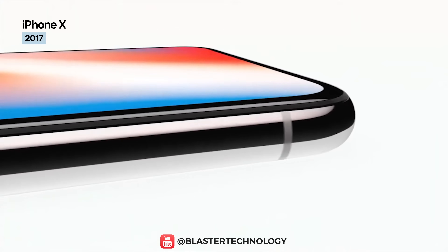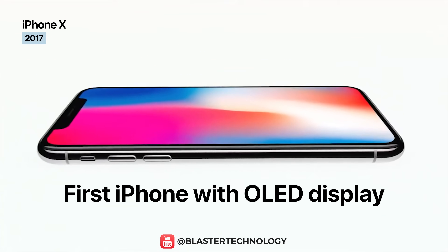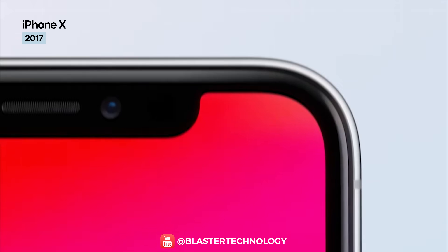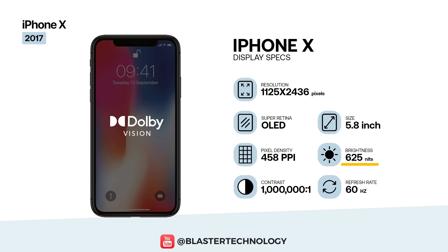The iPhone X marks a major shift. It's the first iPhone with an OLED display, the first without a home button, and the first to introduce the notch. It uses a 5.8-inch Super Retina OLED with a resolution of 1125 x 2436 pixels and a density of 458 ppi. The display offers practically infinite contrast — one million to one — around 625 nits of typical brightness, with support for HDR10 and Dolby Vision.